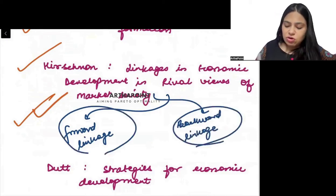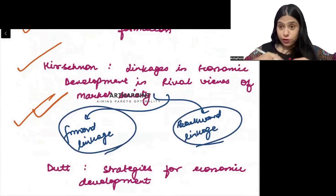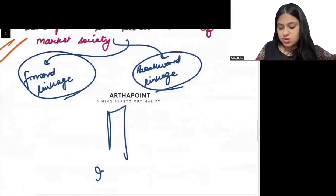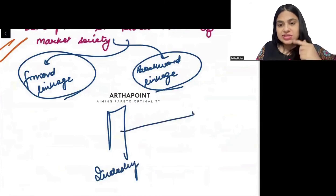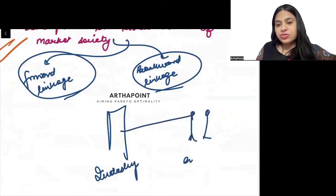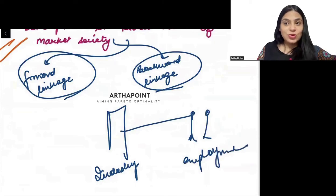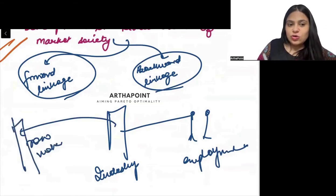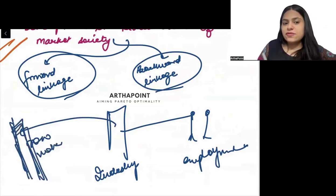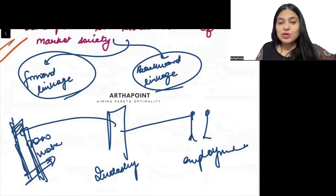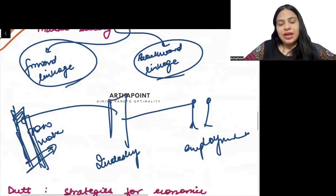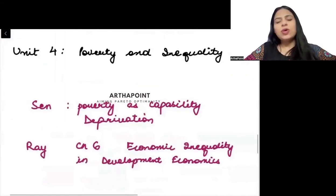Two very important terms here are forward linkage and backward linkage. For example, if there is an industry and it generates employment going forward, that is a forward linkage. If it is asking for raw material from some other place, that is a backward linkage. We will talk about how development leads to further development through these linkages.